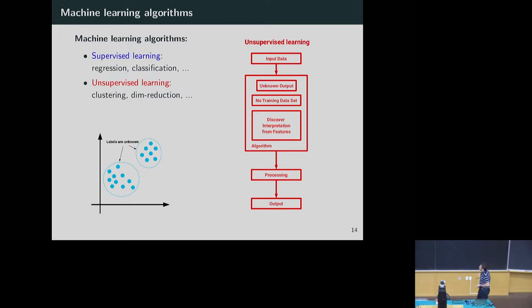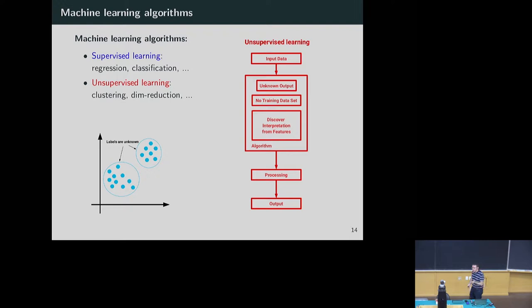The second family of algorithms is unsupervised learning. In this system, we don't know what the truth is, so we have to discover it using these techniques. For example, I can ask how many clusters or features are inside data, and create a catalog of features. This is what we do with unsupervised learning: clustering and dimensionality reduction. If you are familiar with principal component analysis, we can do nonlinear PCA using autoencoders.